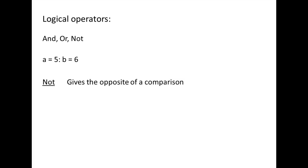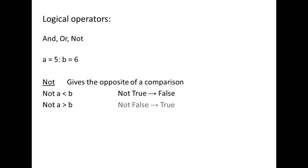The NOT operator changes the result of a comparison to its opposite value. If you place NOT in front of a true comparison, false is returned. If you place NOT in front of a false comparison, true is returned. For example, NOT a less than b: NOT 5 less than 6, NOT true — the opposite of true is false. NOT a greater than b: NOT 5 greater than 6, NOT false — the opposite of false is true.